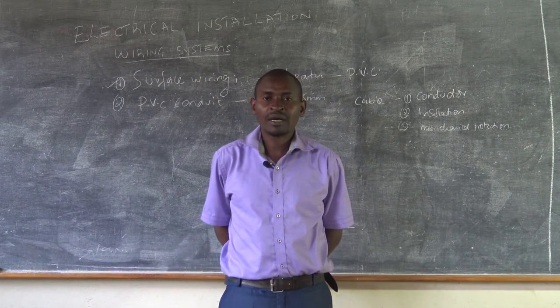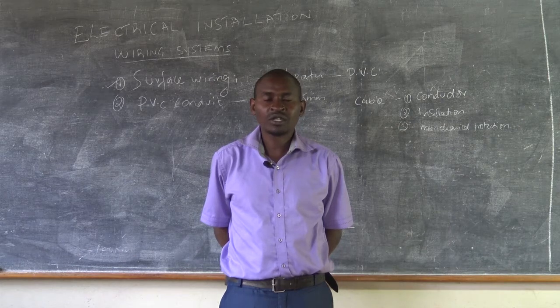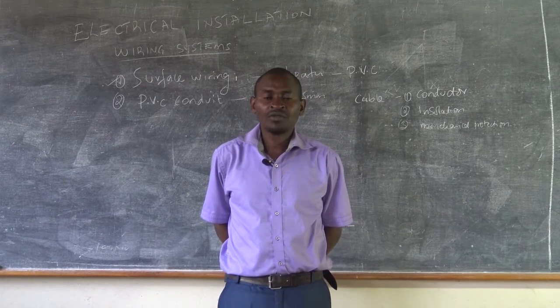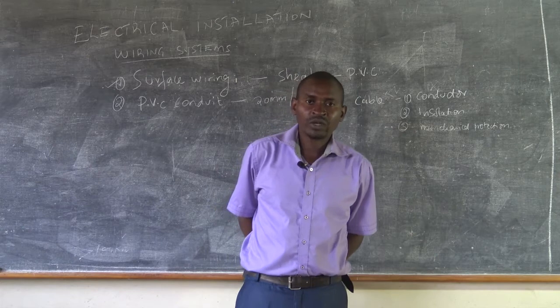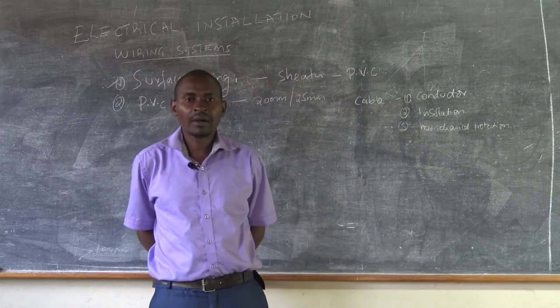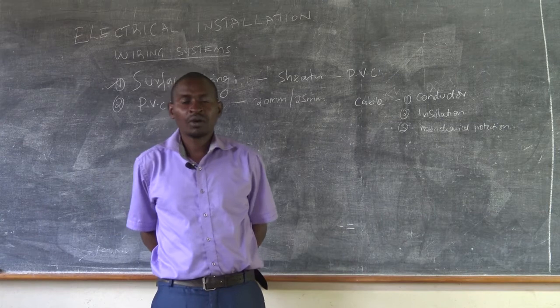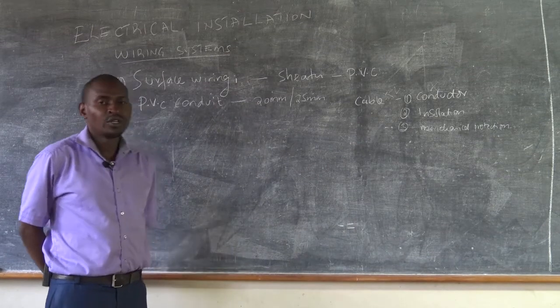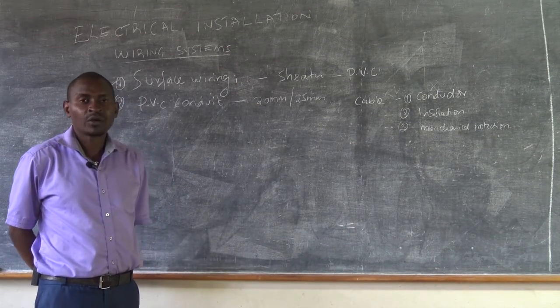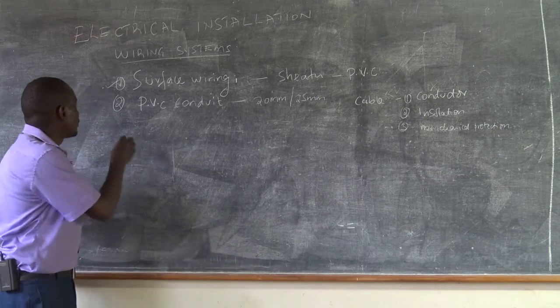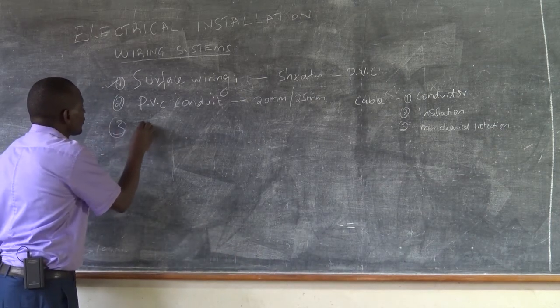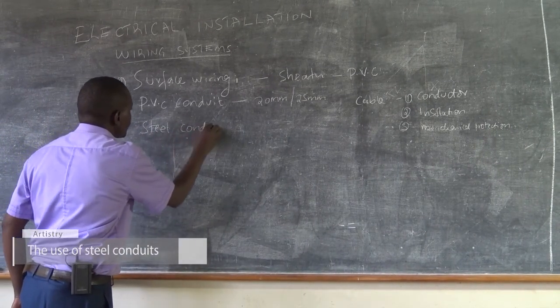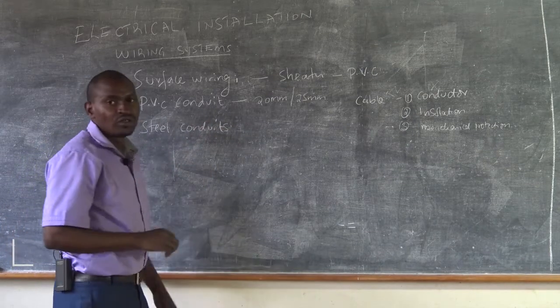We have seen that in domestic purposes or domestic installation, we have two wiring systems: the surface wiring and PVC conduit wiring system. We are going to see other wiring systems that are applicable in both commercial and industrial setup. The other wiring system that is commonly used in the industry and also commercial building is the use of steel conduits.